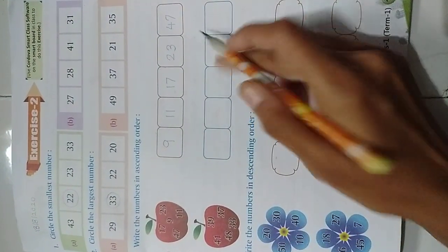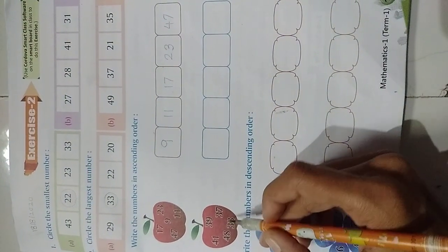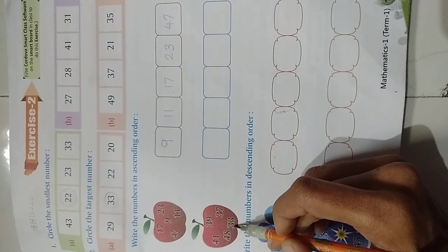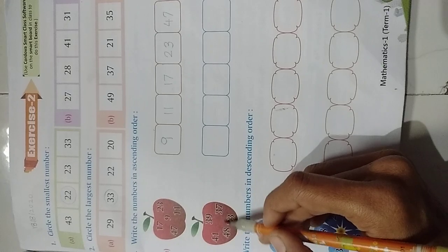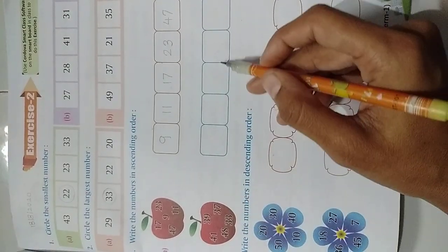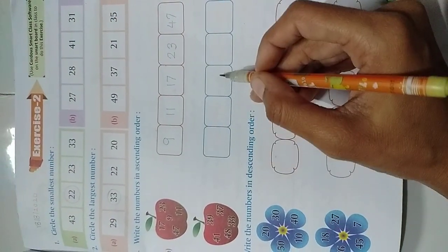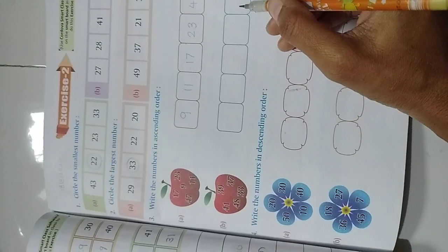So in this way you can solve the next question. You need to find here the smallest number. Then write here. After that next smallest. Then small, big, big, big and the biggest one. You can solve.